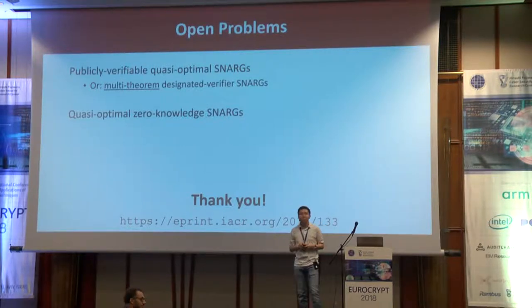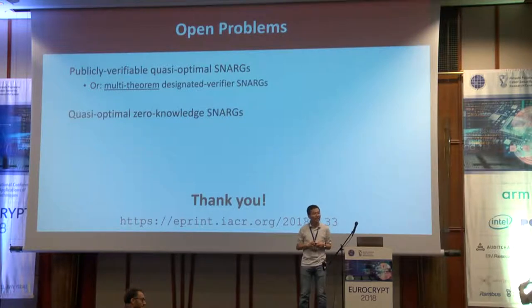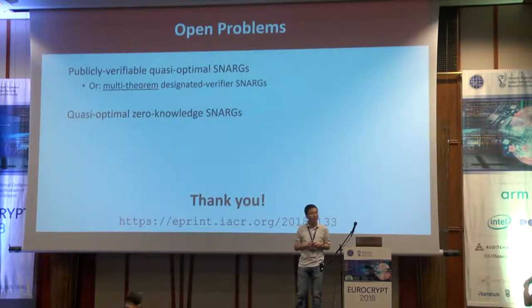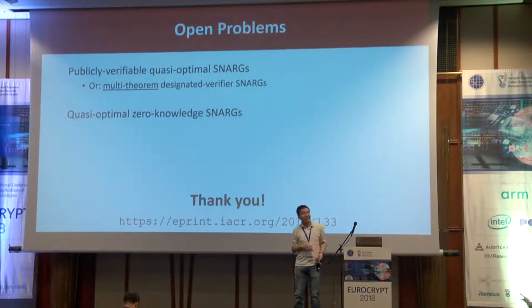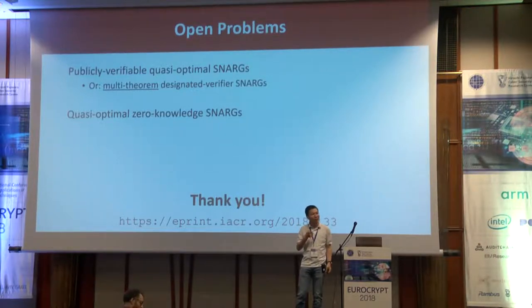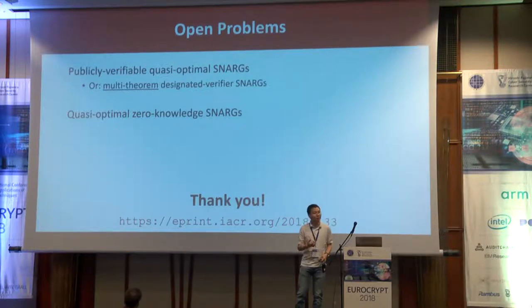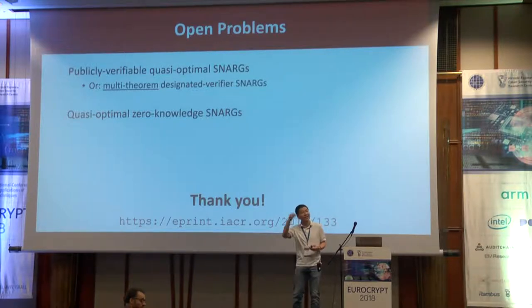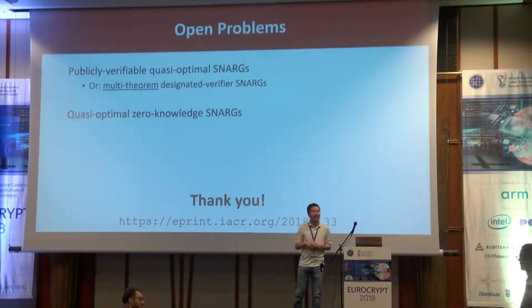Question: You mentioned the encryption scheme should be linear-only, meaning it shouldn't satisfy full homomorphism? Response: That's right. Linear-only means the only homomorphic operations supported by the encryption scheme are additive homomorphism. We can formalize it through the notion of an extractor: there is an extractor that extracts a linear function explaining any adversarial behavior on the ciphertext side.